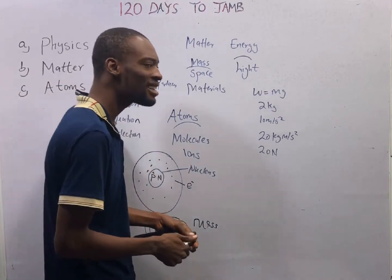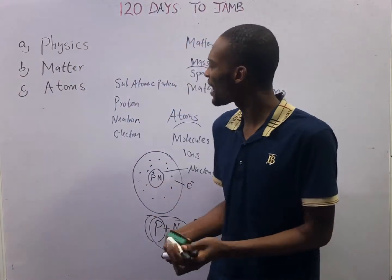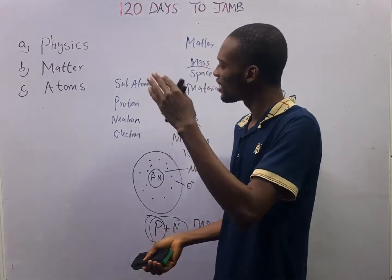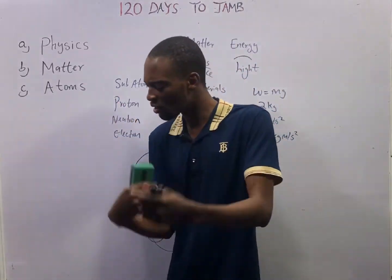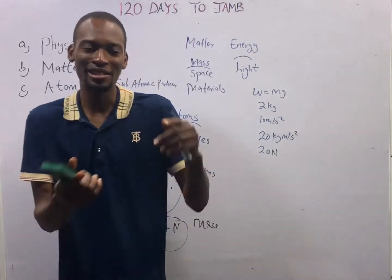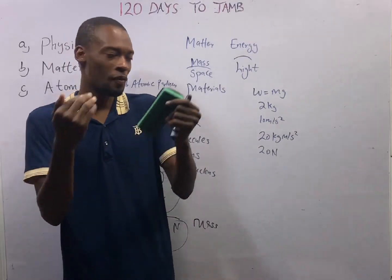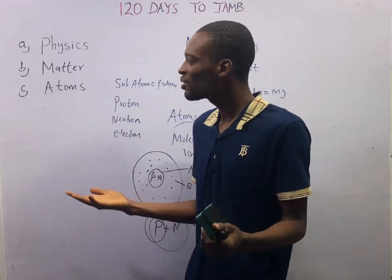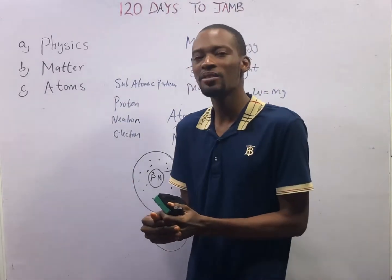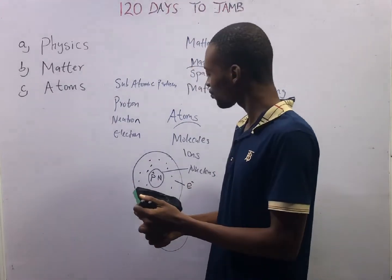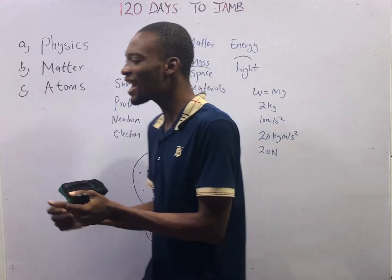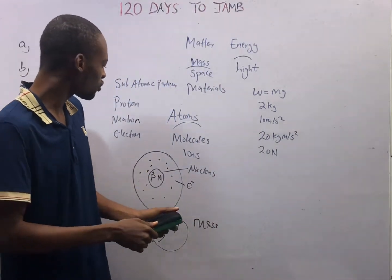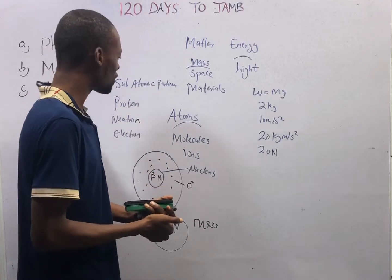The first 20 elements are: hydrogen, helium, lithium, beryllium, boron, carbon, nitrogen, oxygen, fluorine, neon, sodium, magnesium, aluminum, silicon, phosphorus, sulfur, chlorine, argon, potassium, and calcium. This means hydrogen has an atomic number of 1, and helium has an atomic number of 2.